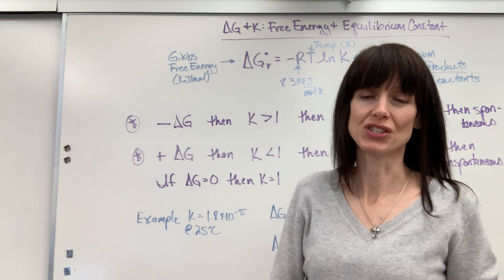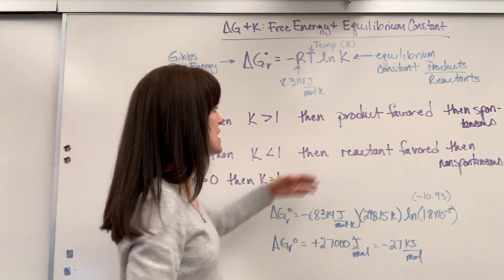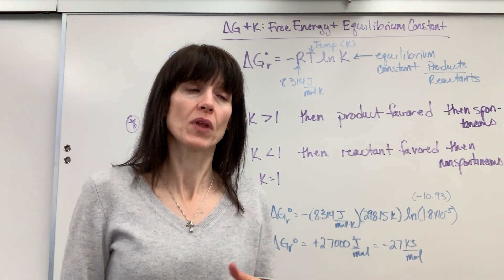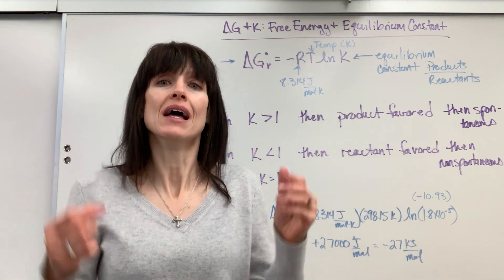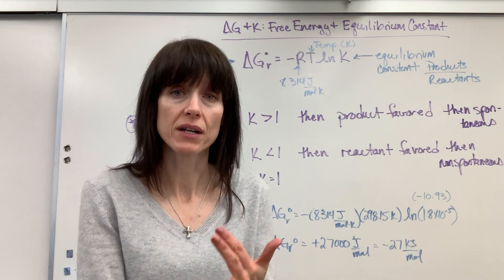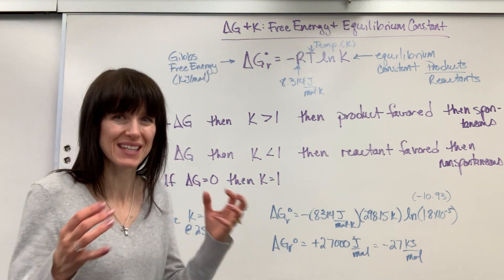When you have a negative delta G, K is greater than 1, which means it's product favored and it's spontaneous. So if I'm given just simple negative delta G, right away I know K is greater than 1, product favored, spontaneous. You want to have all those memorized. Make it make sense that it fits together.